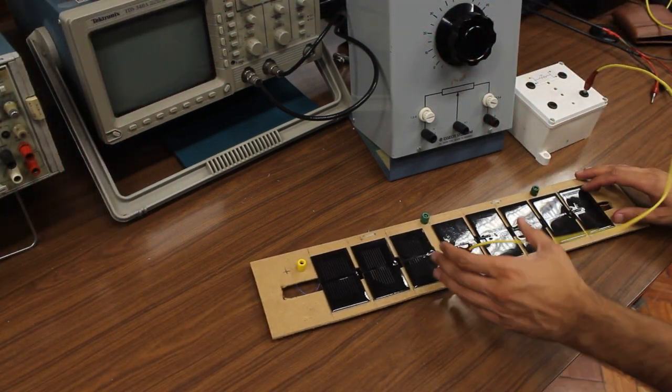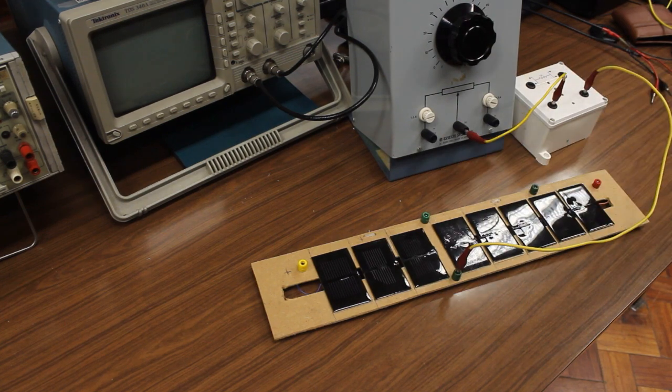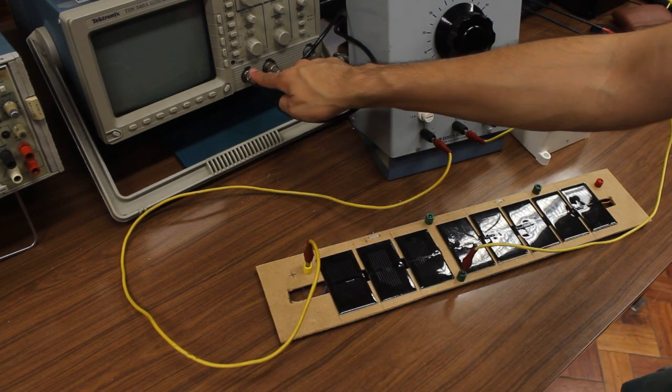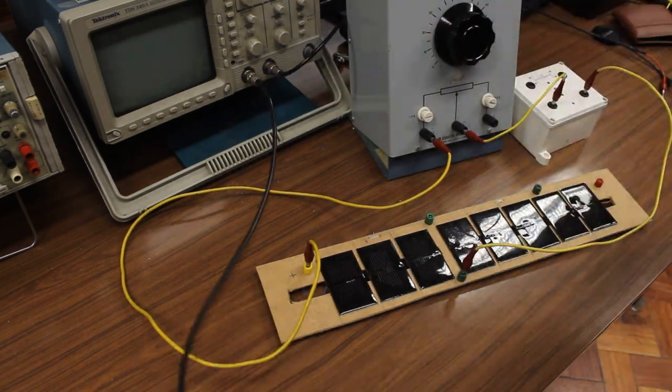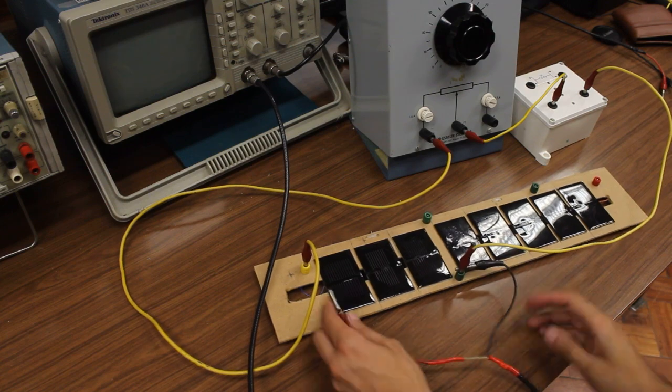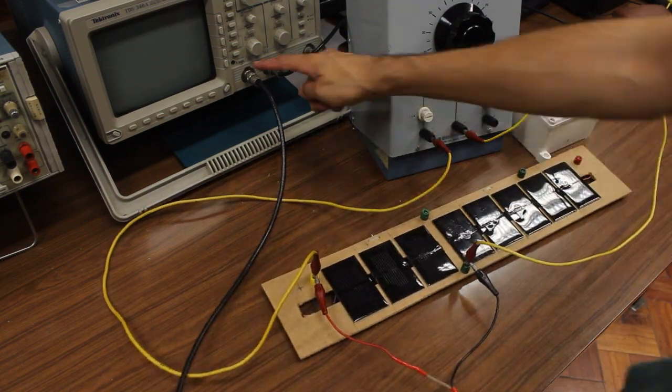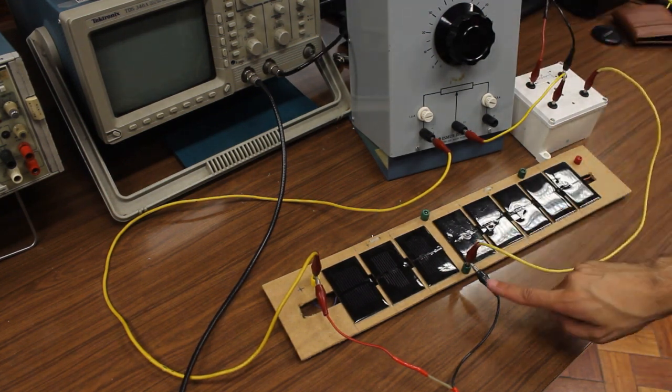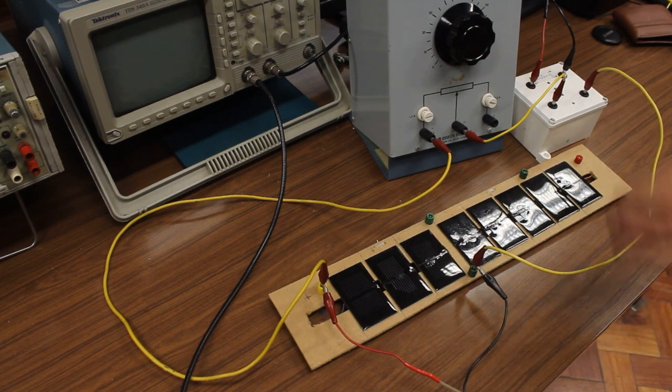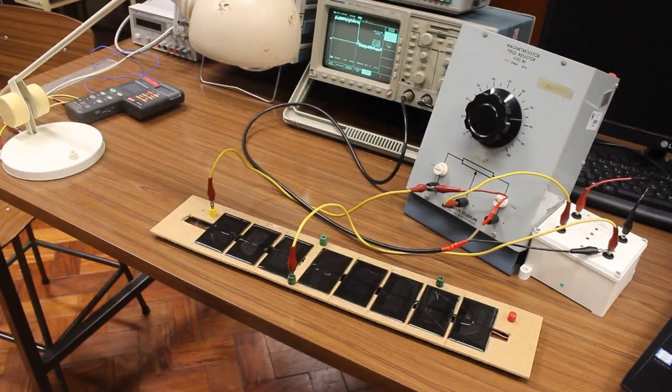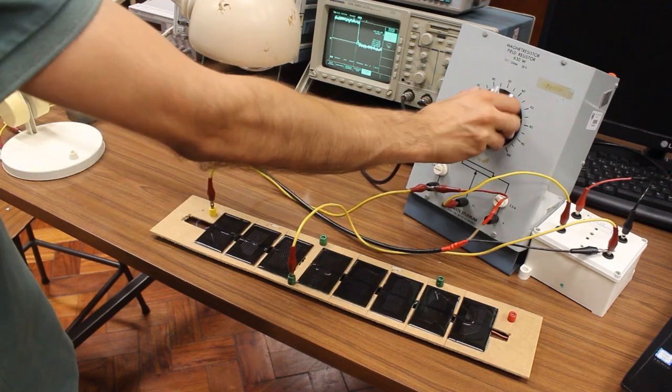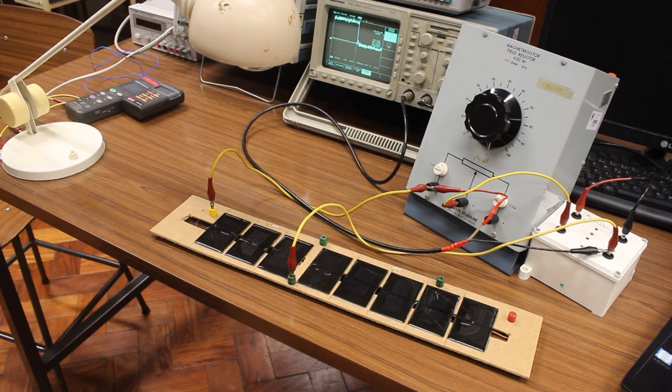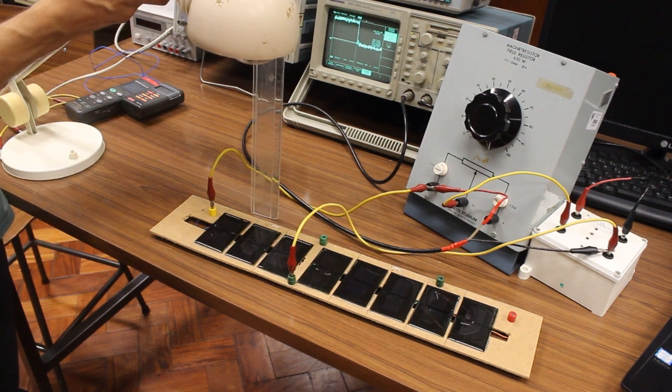Follow the instructions to make all the connections needed for this experiment. Start the experiment by setting the resistance to its maximum value, like this. And then make sure that the distance between the lamp and the solar cells is the correct one.